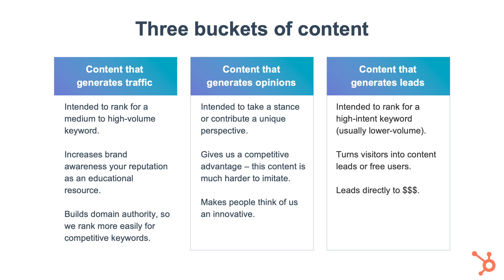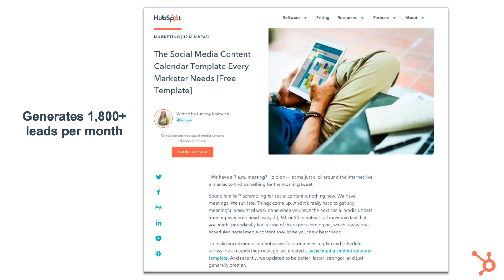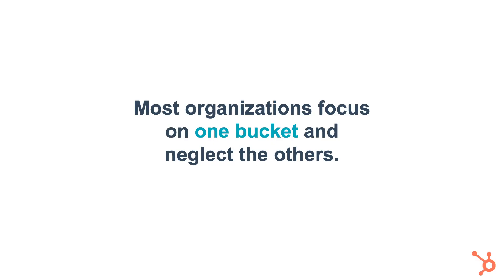The last category is lead gen, which tends to bring in less traffic. The upside is that traffic is higher qualified. These are the people that are gonna download your content offers. They're typically known as bottom of the funnel, and it's a lot closer to revenue than the other two buckets of content. Nearly 2,000 people download this social media content calendar template every month after visiting our blog post. It's really tough to prioritize all three buckets of content equally.